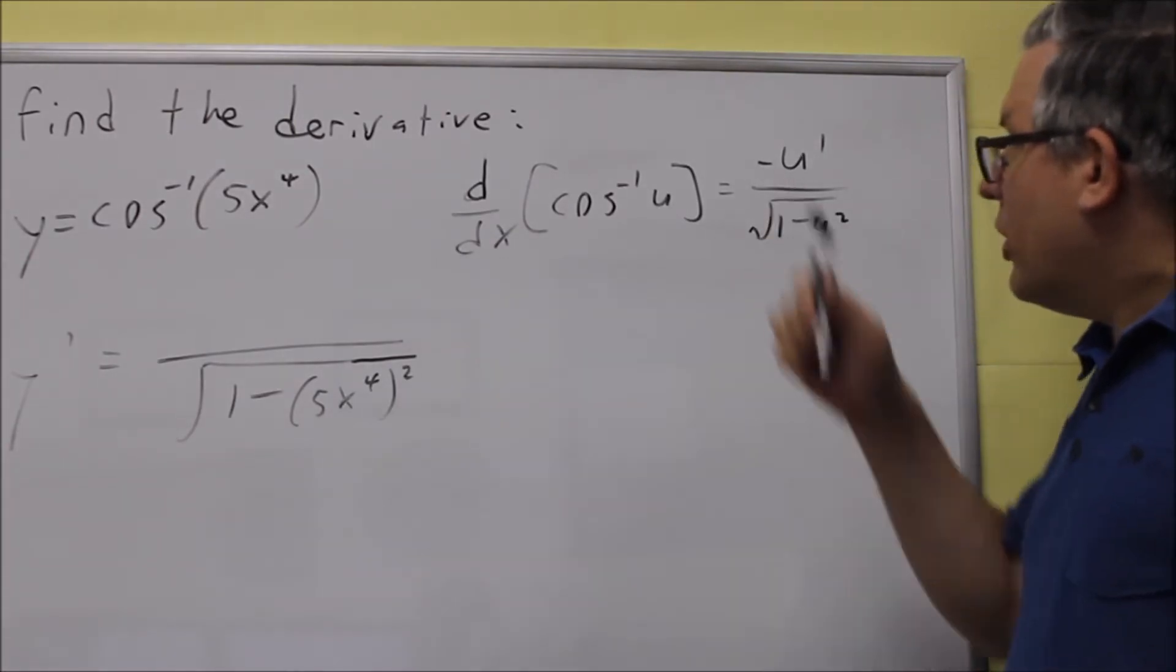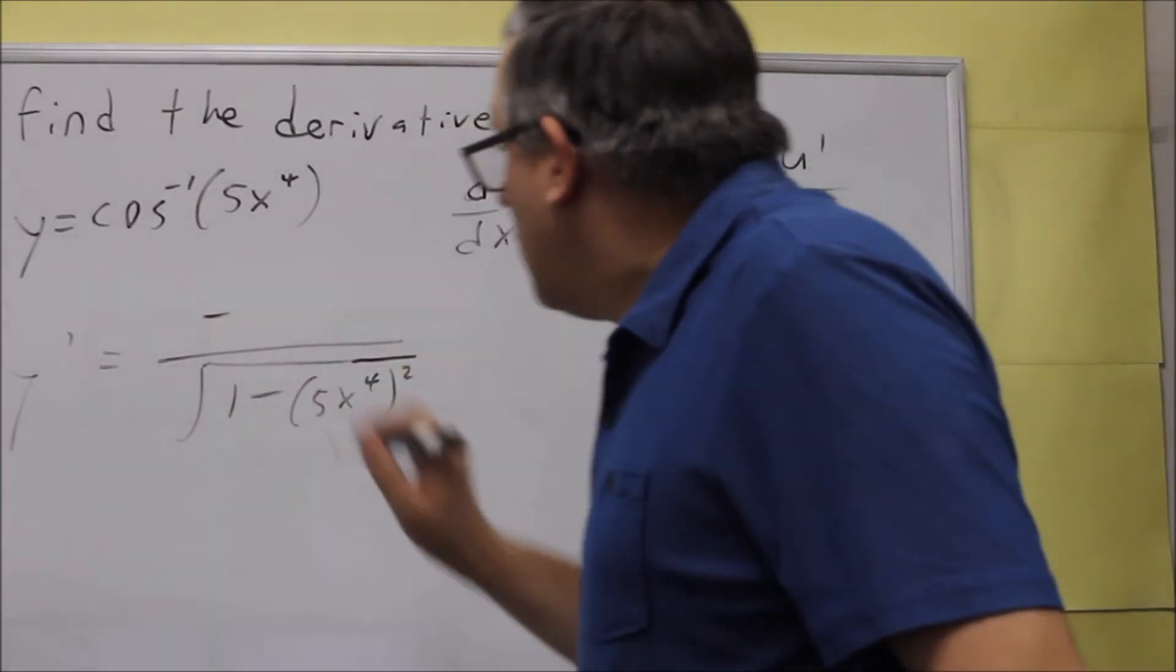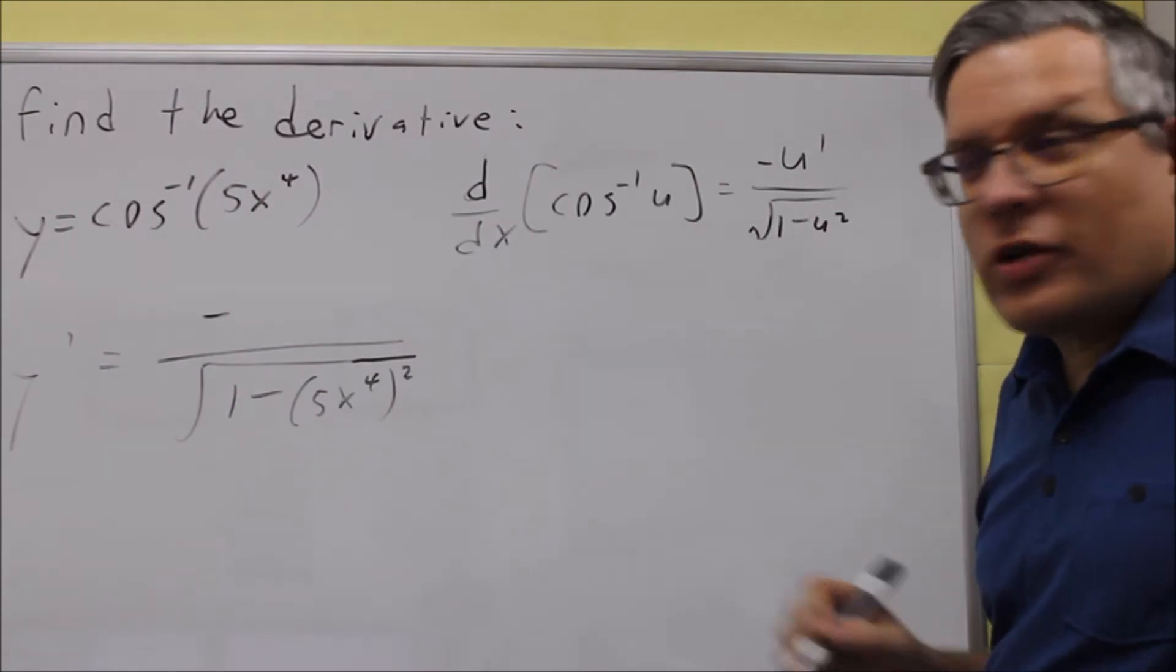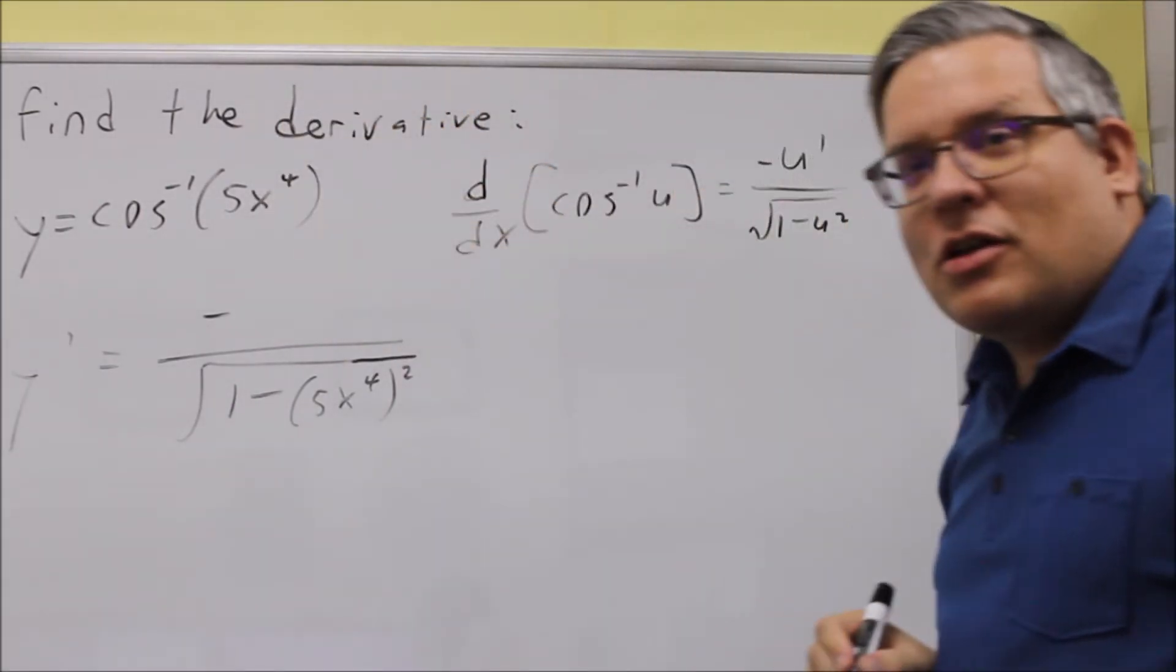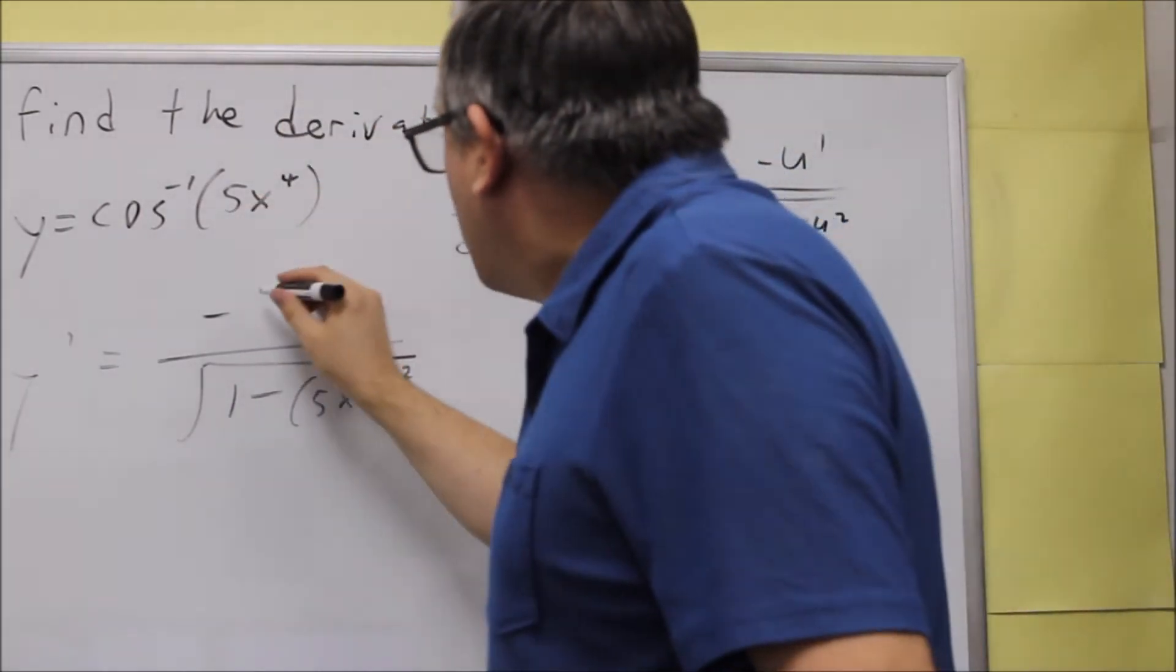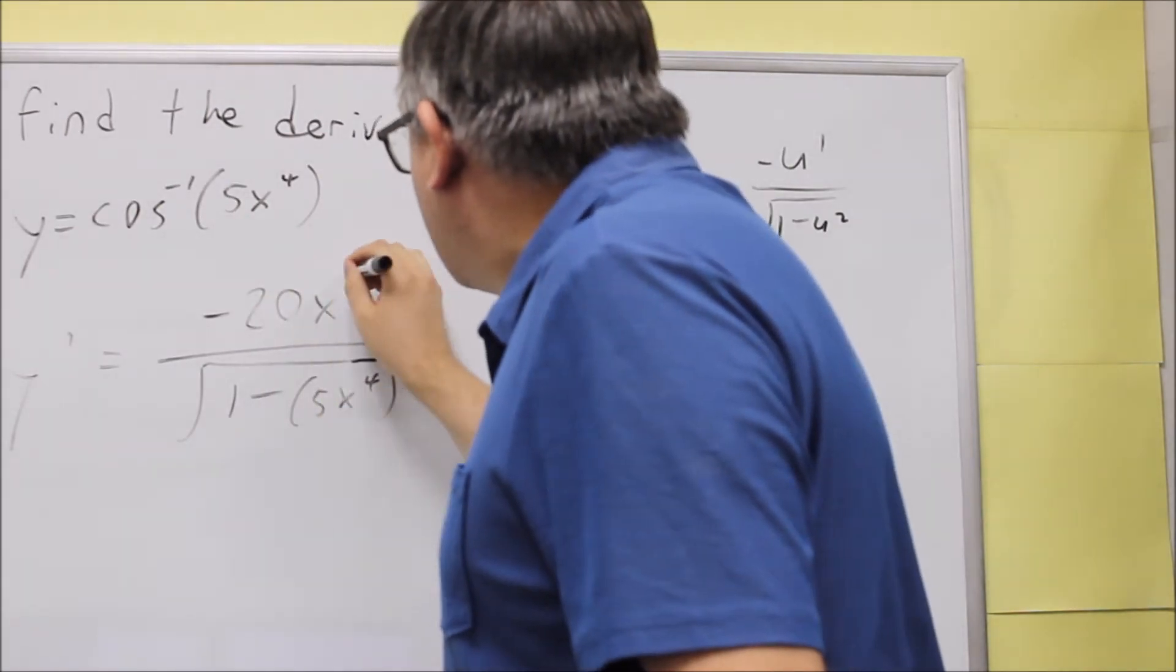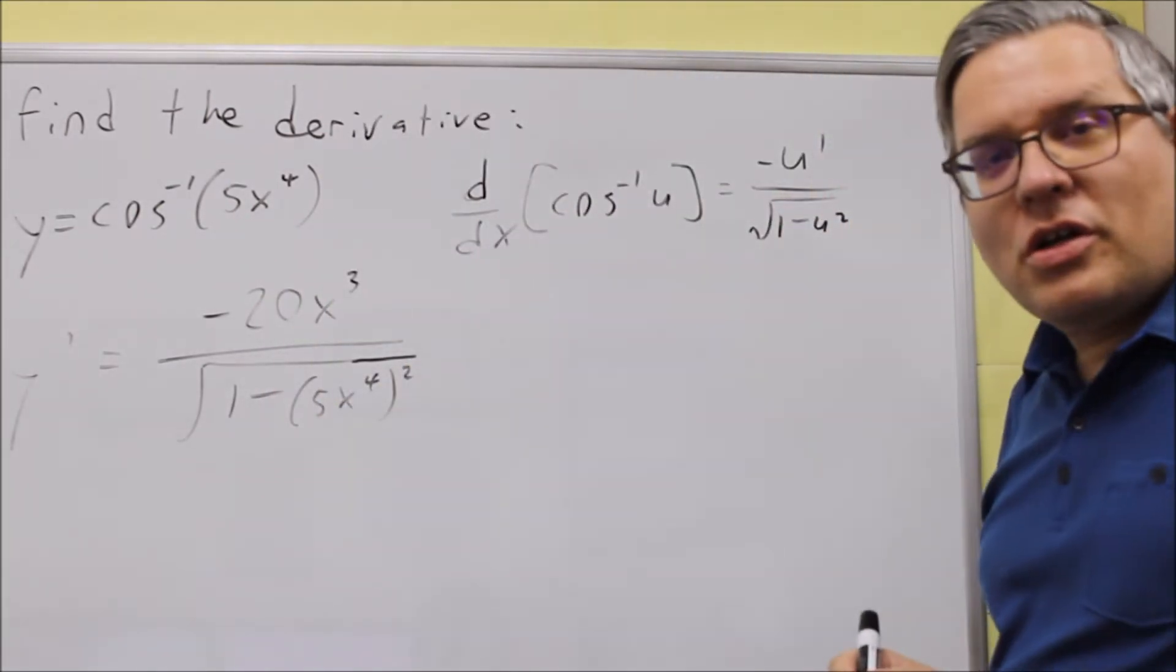On the top, we have a negative and then u prime. That's just the derivative of what's on the inside. So 4 comes down, we're going to do our power rule, 20x to the third, like that.